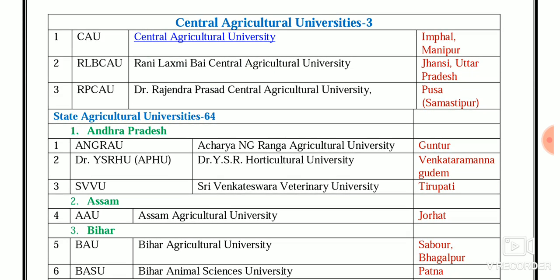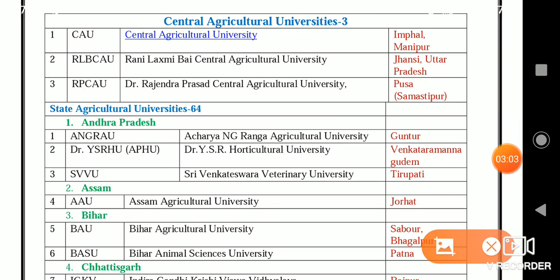The three Central Agriculture Universities (CAUs) are: CAU — Central Agriculture University at Imphal, Manipur; RLB CAU — Rani Lakshmi Bai Central Agriculture University at Jhansi, UP; and RPCAU — Dr. Rajendra Prasad Central Agriculture University at Pusa, Samastipur.